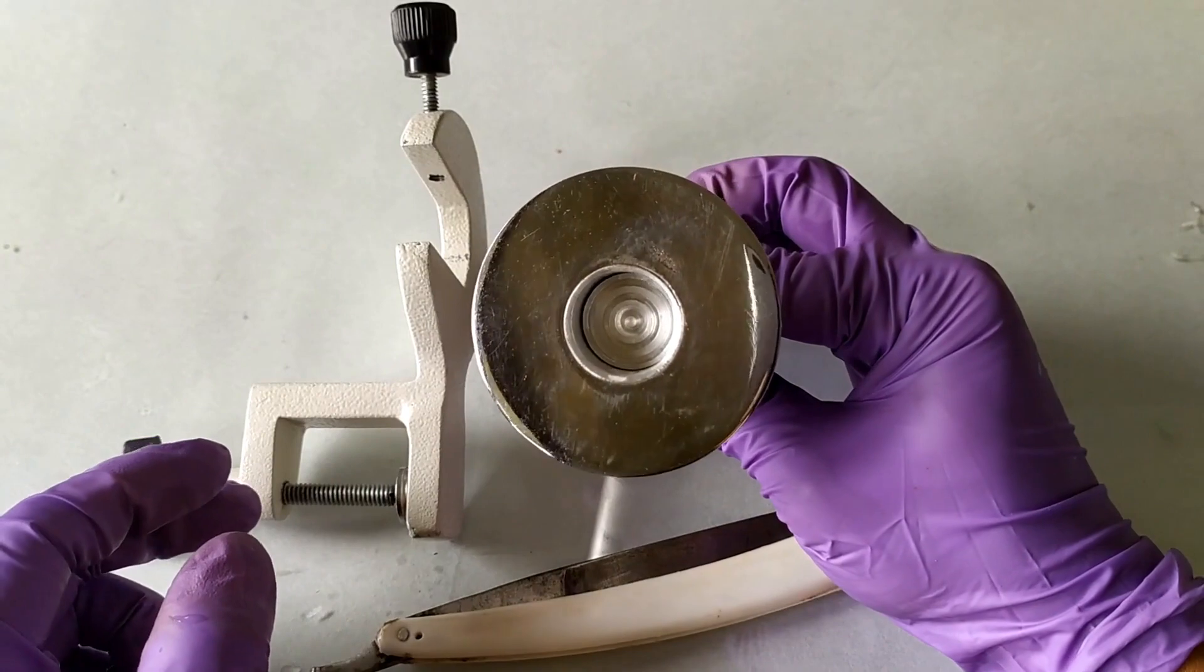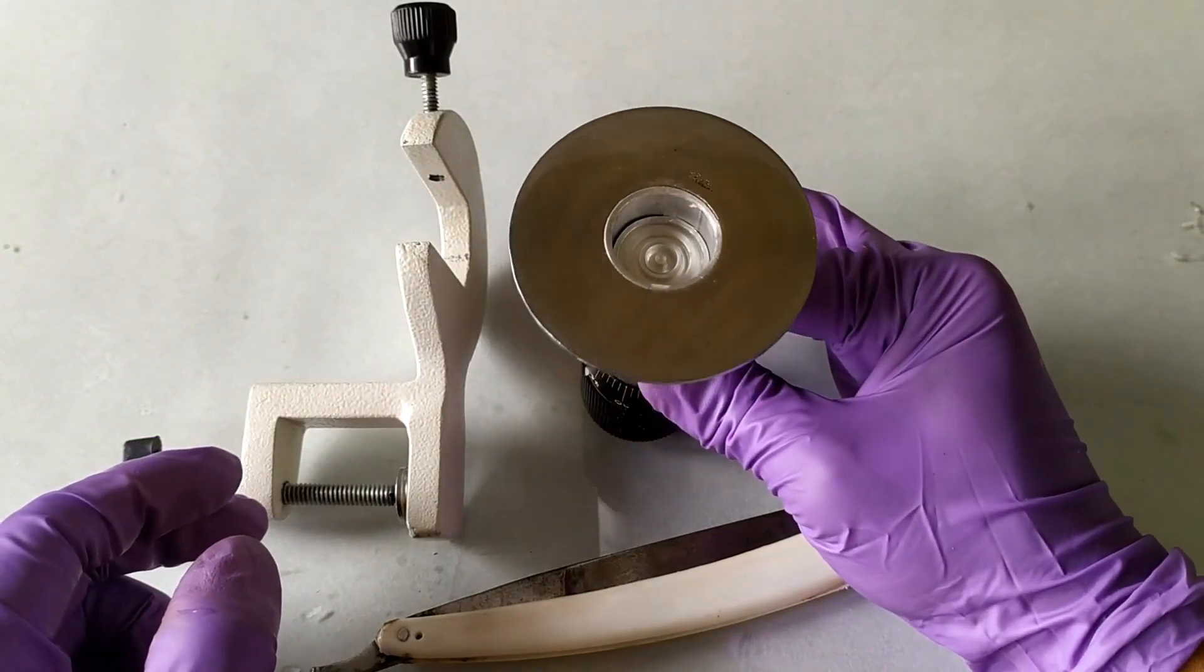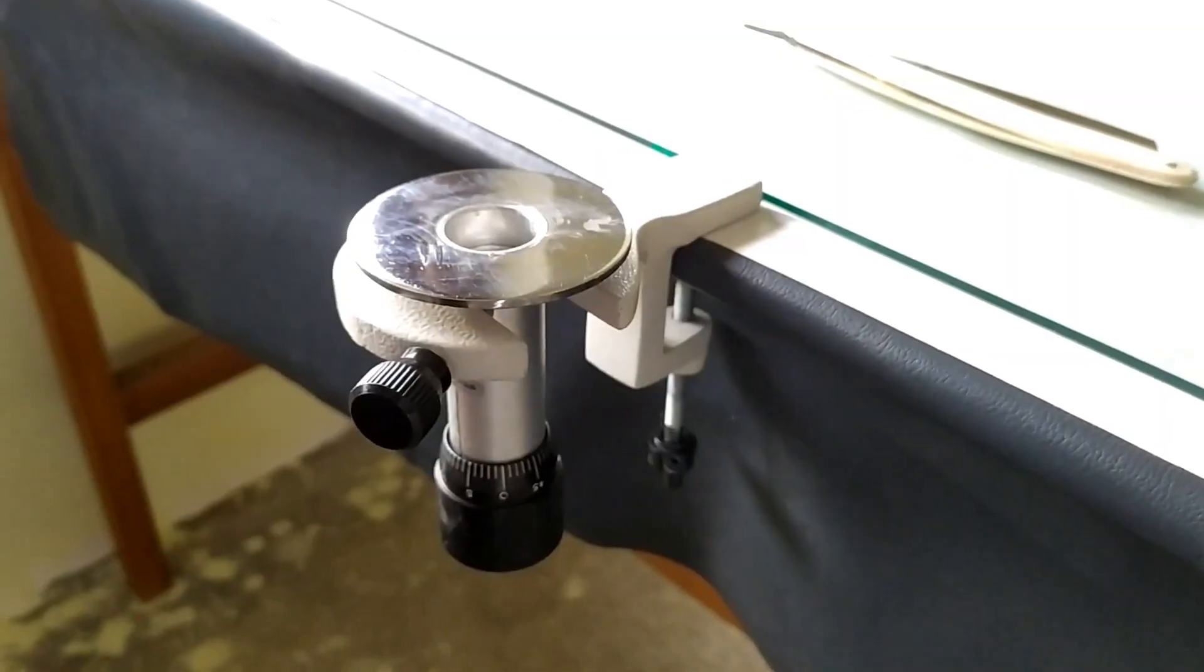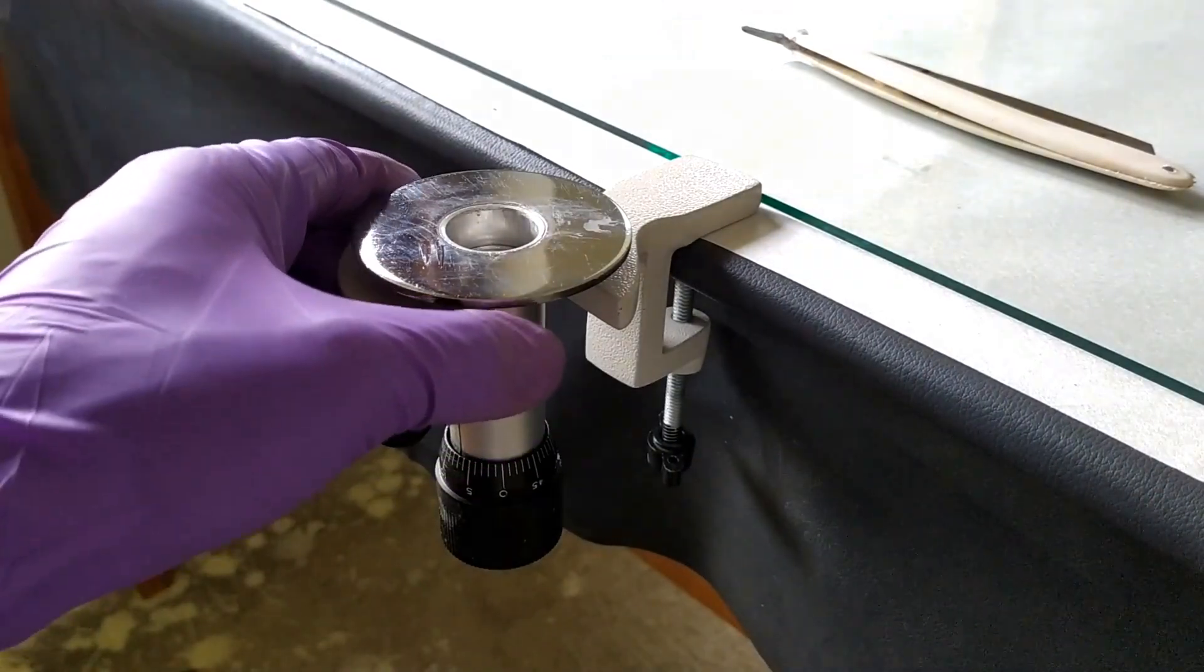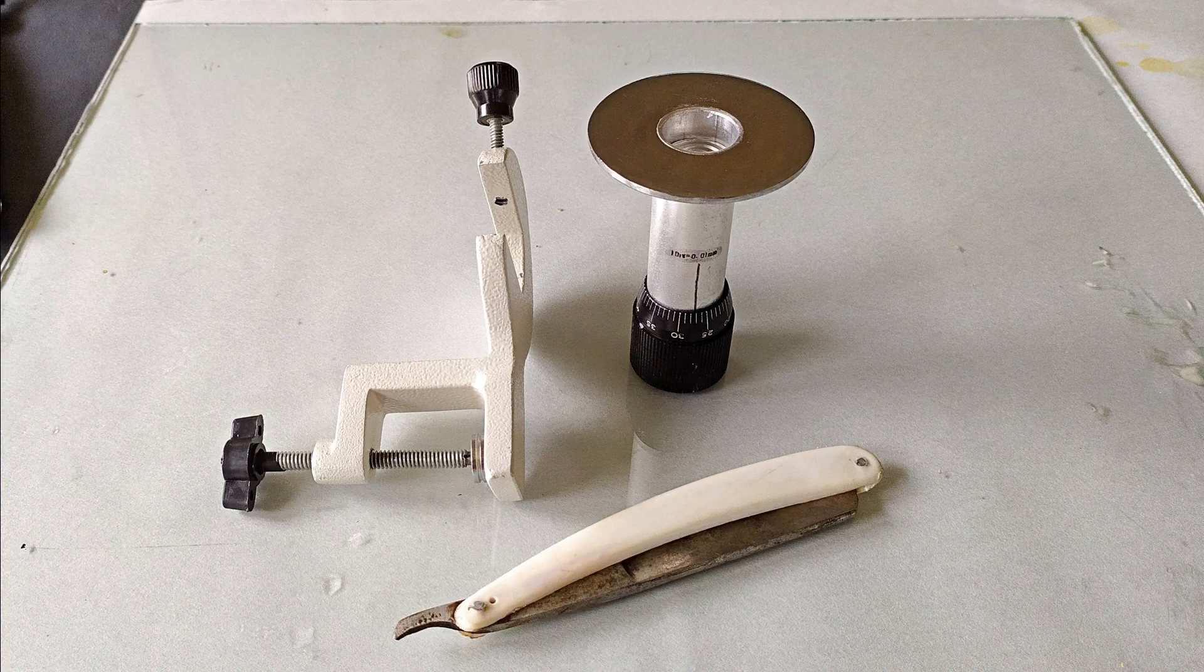The hand microtome can be used either as a handheld tool or a table top device if you couple it up with the table clamp accessory that comes with the microtome. A typical unit also usually comes with a razor blade.